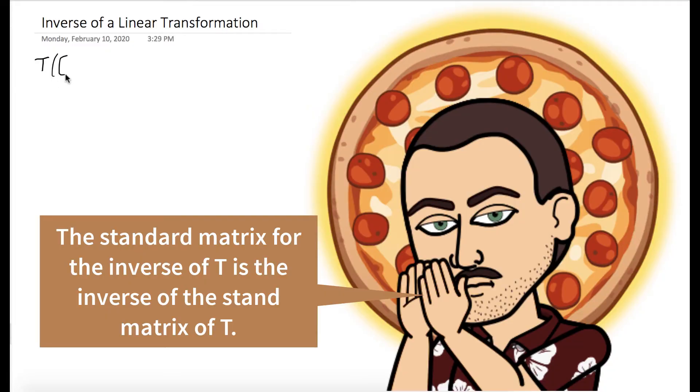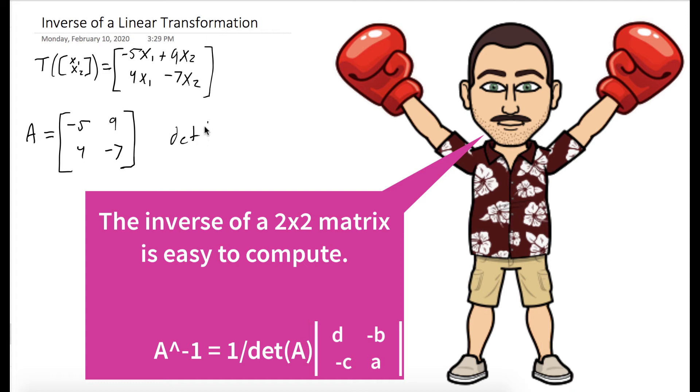So to find the inverse of T, really all we have to do is find the inverse of the standard matrix for T. The standard matrix we can get by just reading off the coefficients of the equations of T. So our standard matrix is minus 5, 9, 4, negative 7. And so we want to find the inverse of A.